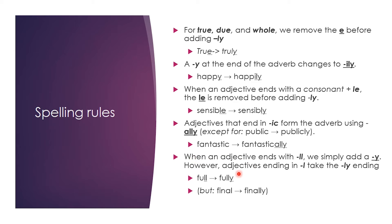Also, if the word ends in a double -ll, simply add -y. Don't remove anything. For example, full becomes fully. However, for a word like final — which has a single 'l' — we simply add -ly and it becomes finally. There is an exception for public: it ends with -ic, but the adverb form is not publically — instead, we add -ly to get publicly. Keep that in mind.